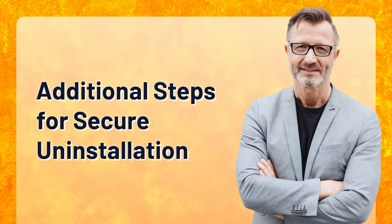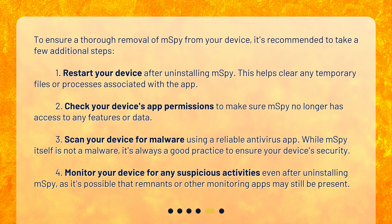Additional Steps for Secure Uninstallation. To ensure a thorough removal of MSPY from your device, it's recommended to take a few additional steps. Step 1: Restart your device after uninstalling MSPY. This helps clear any temporary files or processes associated with the app. Step 2: Check your device's app permissions to make sure MSPY no longer has access to any features or data. Step 3: Scan your device for malware using a reliable antivirus app. While MSPY itself is not malware, it's always a good practice to ensure your device's security.